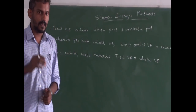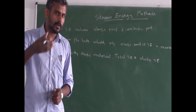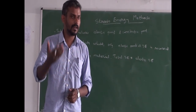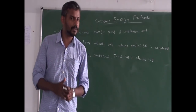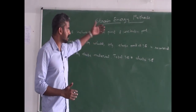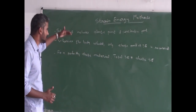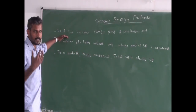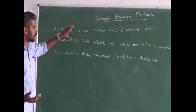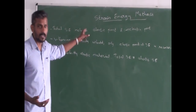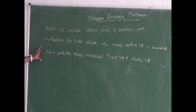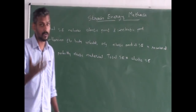The total strain energy consists of an elastic part and an inelastic part. Whenever the body is unloaded, only the elastic part of the strain energy is recovered. So for a perfectly elastic material, the total strain energy and the elastic part of the strain energy are equal.